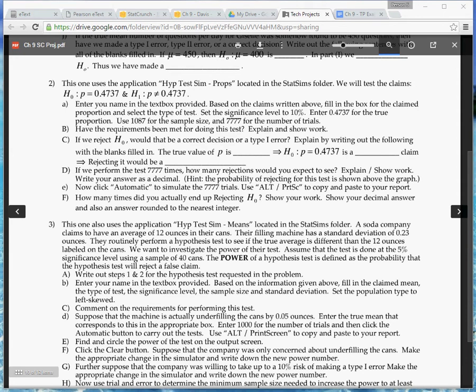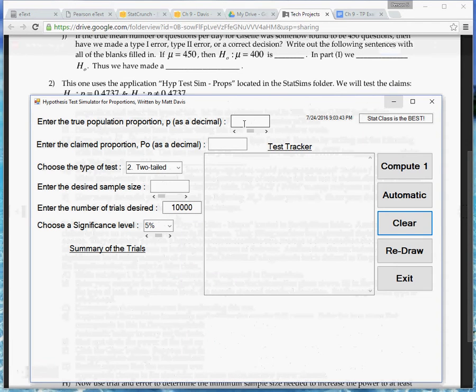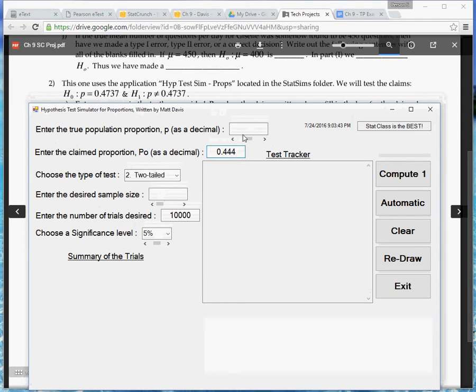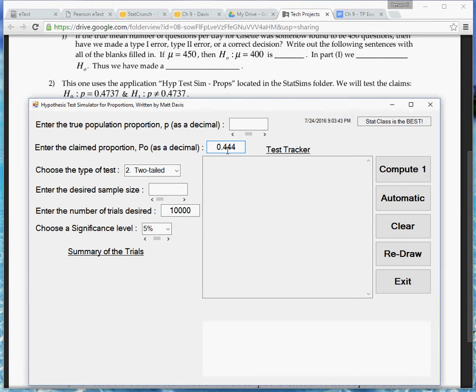So let's go ahead and pull up that StatSim and enter the true proportion and the claim proportion. So first of all, the claim proportion comes from H0. So this is what I'm going to do. You would just put, slide this down a little bit, your .4737 right there. And the true proportion sometimes is the same as what's claimed, sometimes is different. In this particular problem, you'll see that they want you to enter the same value as what's claimed because they want you to be looking at what happens when you test a true claim.